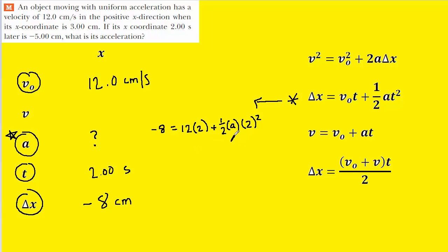So with a little bit of simple algebra, we're going to be able to solve for the unknown acceleration. And if you were successful in doing so, you should obtain a result of negative 16 centimeters per second.